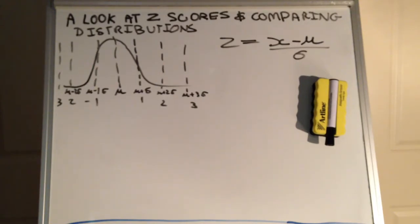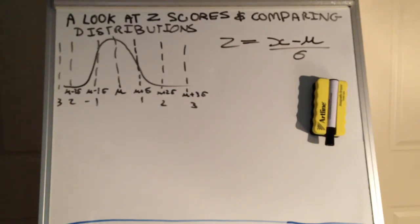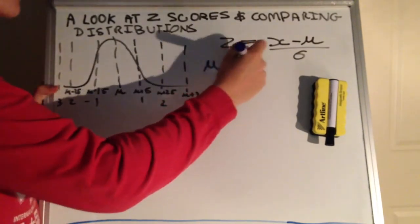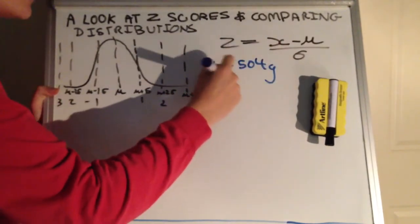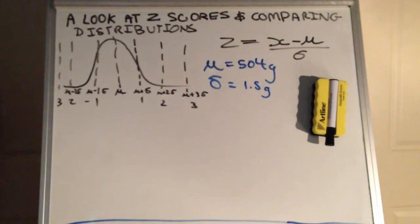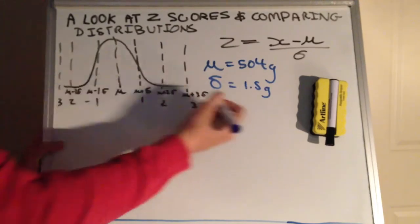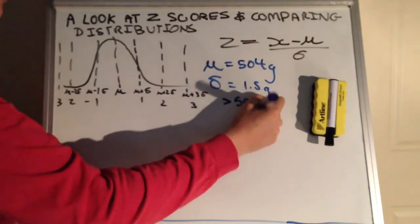I've got three questions prepared, so we'll go ahead and start. The first question says a manufacturer who produces cans of soup discovers that the contents of any given can is normally distributed with a mean of 504 grams and a standard deviation of 1.5 grams. It says if the can of soup is less than 500 grams it will be rejected, so the can must be greater than 500 grams else it is rejected.